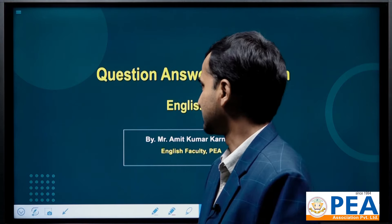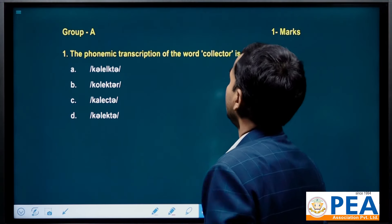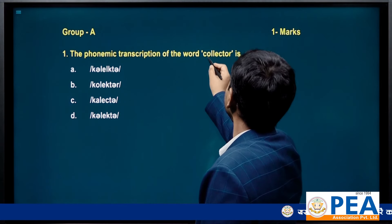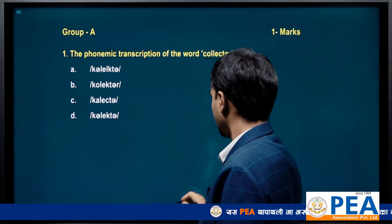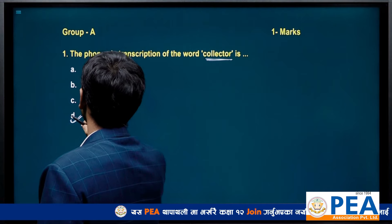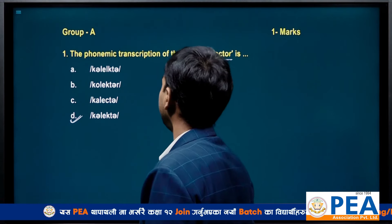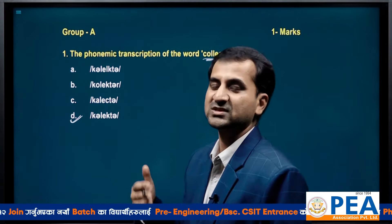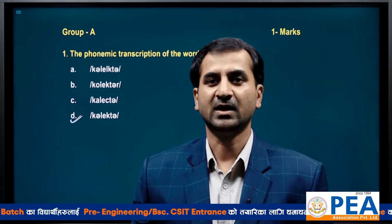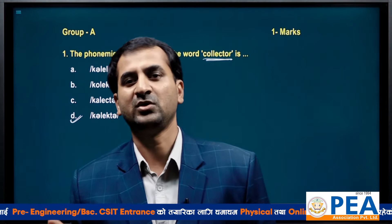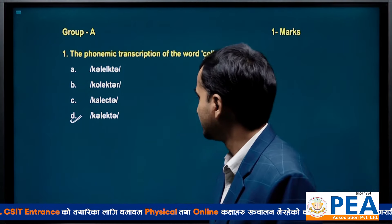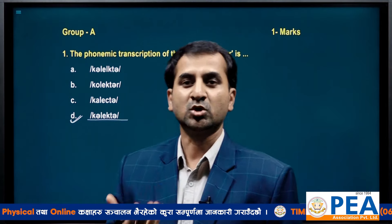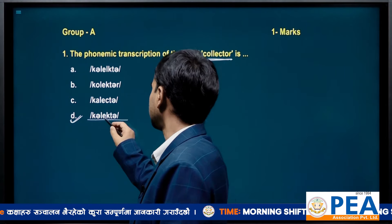See the first question: the phonetic transcription of the word 'collector'. You don't have to think much about this one — the right answer is D. For these kinds of questions, you will have to follow the Oxford Dictionary. If you are in the habit of turning the pages of the Oxford Dictionary, you will be able to solve these questions. The motive behind this sort of question is to improve your pronunciation.